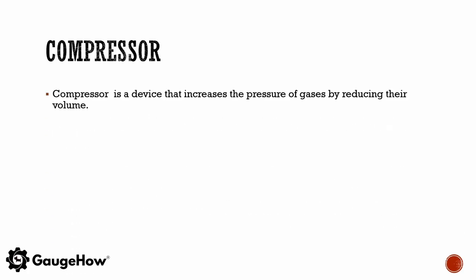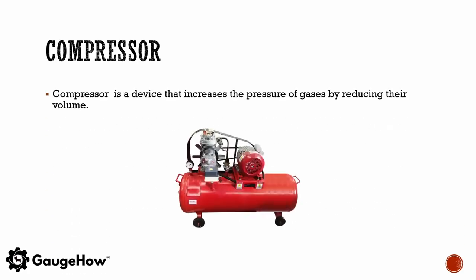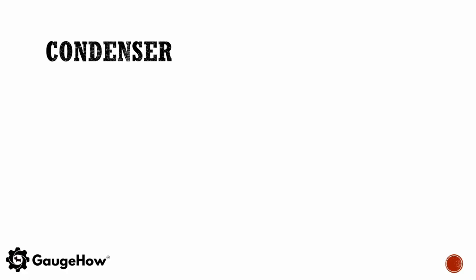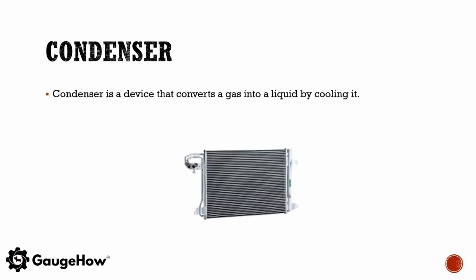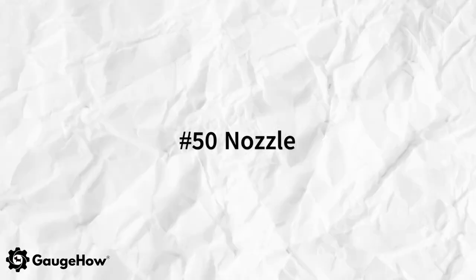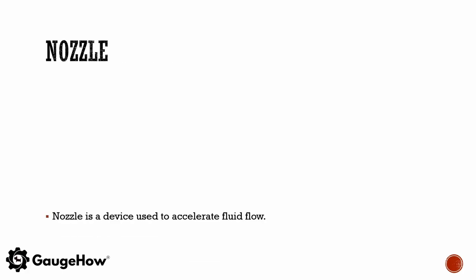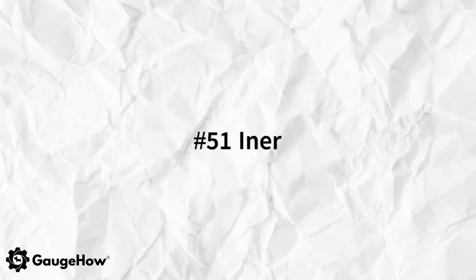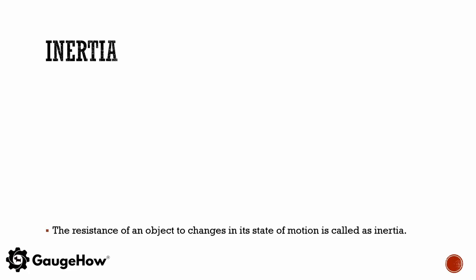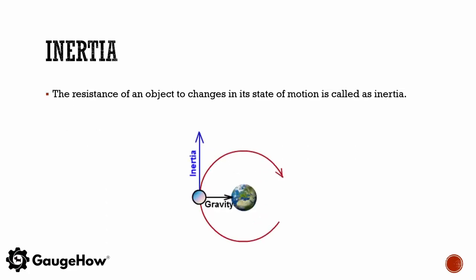A compressor is a device that increases the pressure of gases by reducing their volume. A condenser is a device that converts gas into liquid by cooling it. A nozzle is a device used to accelerate fluid flow. The resistance of an object to change in its state of motion is called inertia.